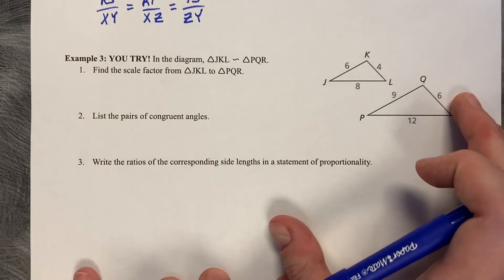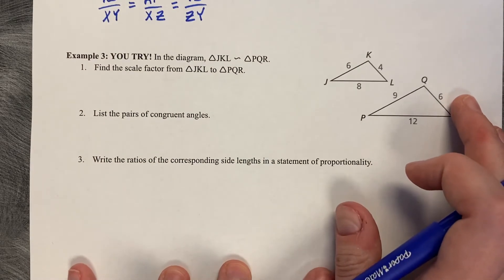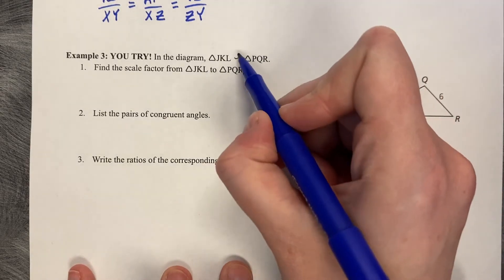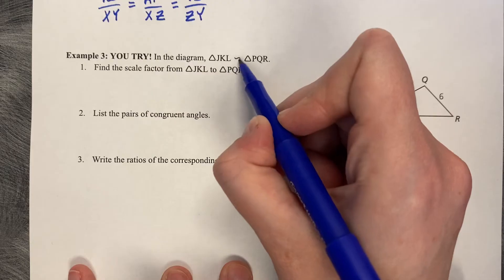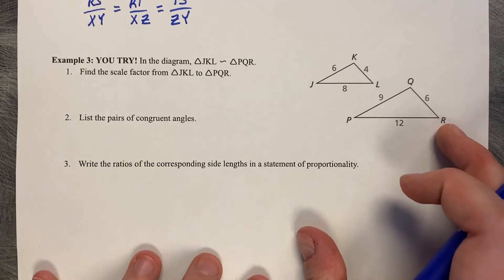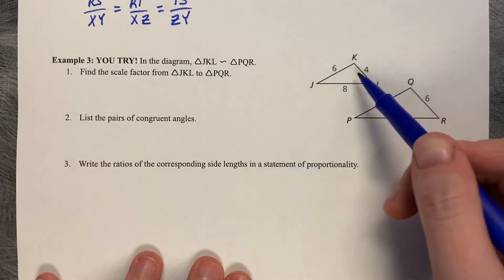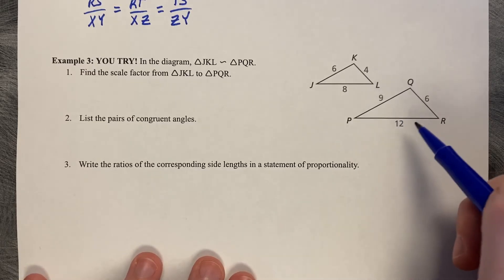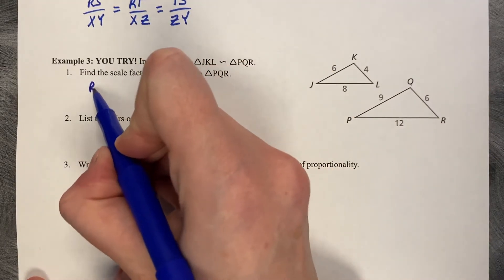Pause this video and you try. In this diagram, triangle JKL is similar to PQR. Find the scale factor from JKL to PQR. So we're gaining in size, we're going from smaller to larger. So we want to do the larger one on top. So I'm going to do PR over JL.